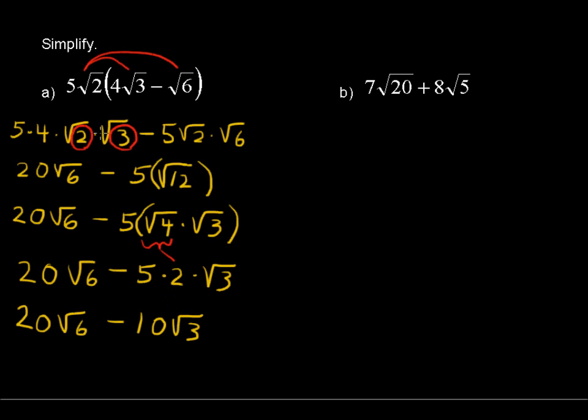You have 20√6 minus 10√3. Now remember I said you can multiply underneath the radical. You can't add or subtract under the radical. We'll see in the next example where we have a special case, but here we can't say 6 minus 3 here. So this is the final answer for this problem.